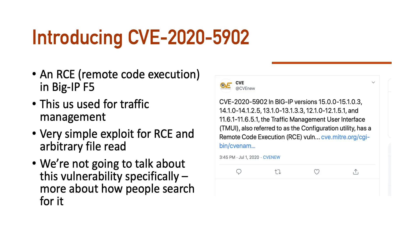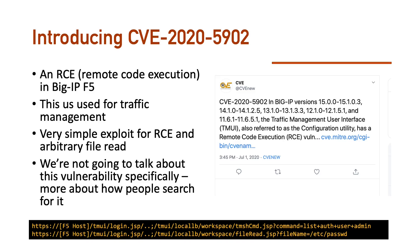This is why you have to reverse engineer them. Introducing CVE-2020-5902, the meme of the week. This is an RCE — remote code execution — meaning you can run code on another machine via the internet, in F5's Big IP, which is used for traffic management. It's a very simple exploit, which is why it got a lot of publicity. There are two payloads: the first is an RCE and the second is an arbitrary file read. When this was first released and shown on Twitter, it actually didn't get a lot of attention.